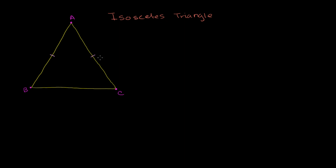An isosceles triangle just means that two of the sides are equal to each other. What I want to prove in this video is that these two base angles — the angles between one of the equal sides and the side that isn't equal — are congruent. So I want to prove that angle ABC is congruent to angle ACB. Those are called the base angles, and the top is called the vertex angle. The two equal sides are called the legs, and the bottom is called the base.